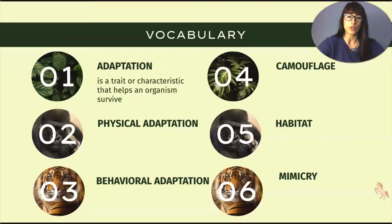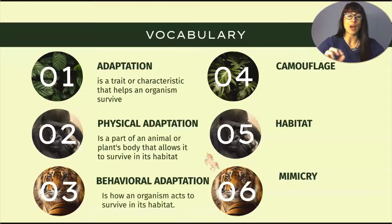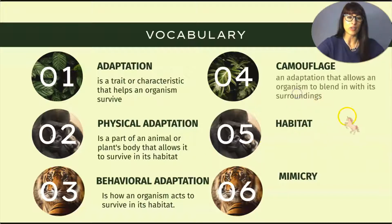Adaptation is a trait or characteristic that helps an organism to survive. We learned about two different types: physical adaptation and behavioral adaptation. Physical adaptation is the part of an animal or plant's body that allows it to survive in its habitat. Behavioral adaptation is how an organism acts to survive in its habitat. Camouflage is an adaptation that allows an organism to blend in with its surroundings.